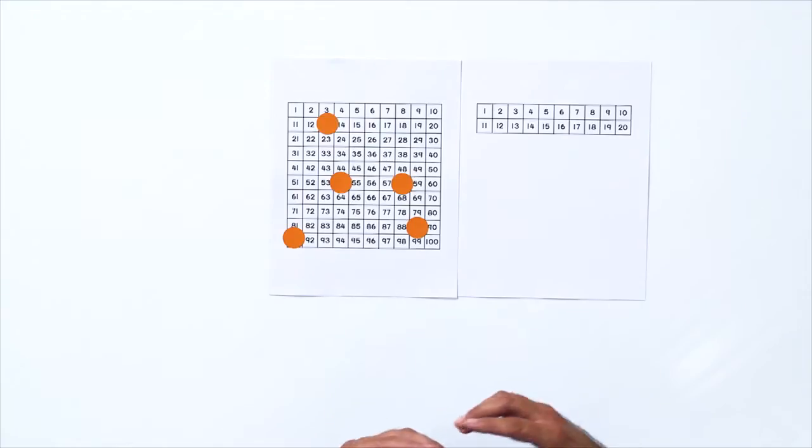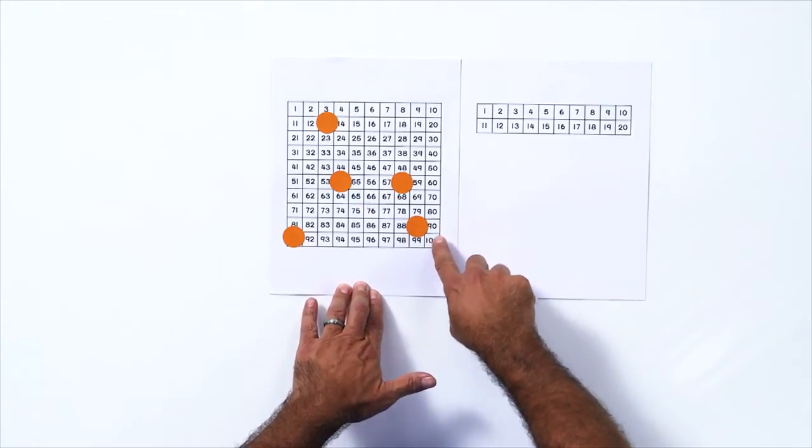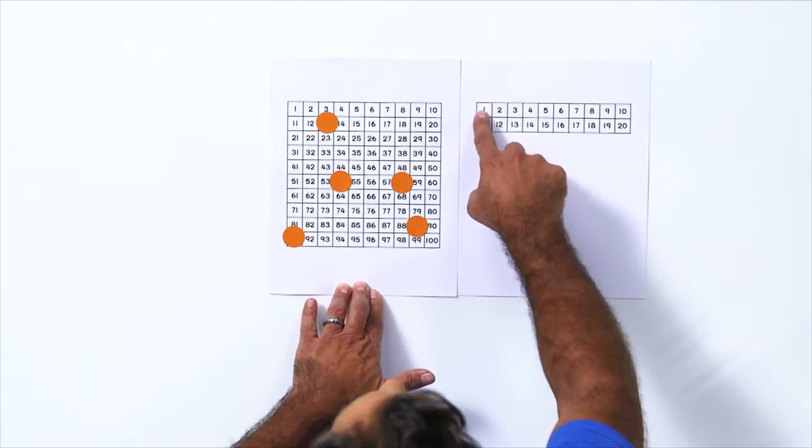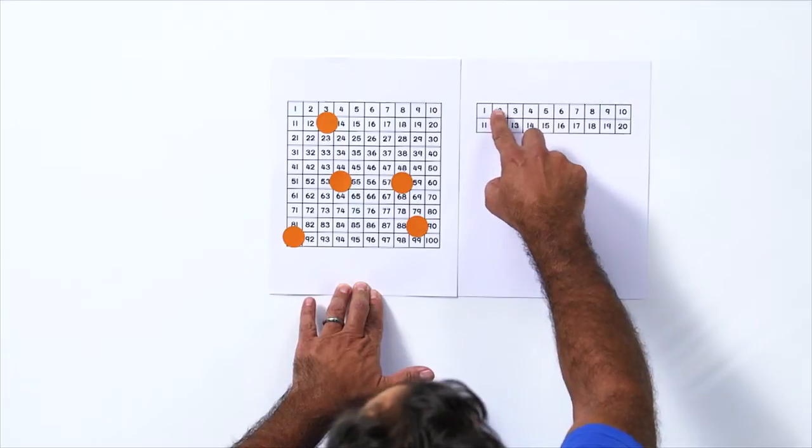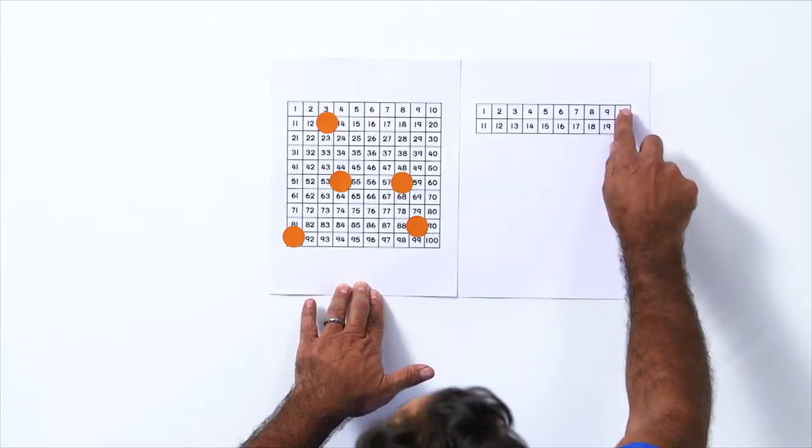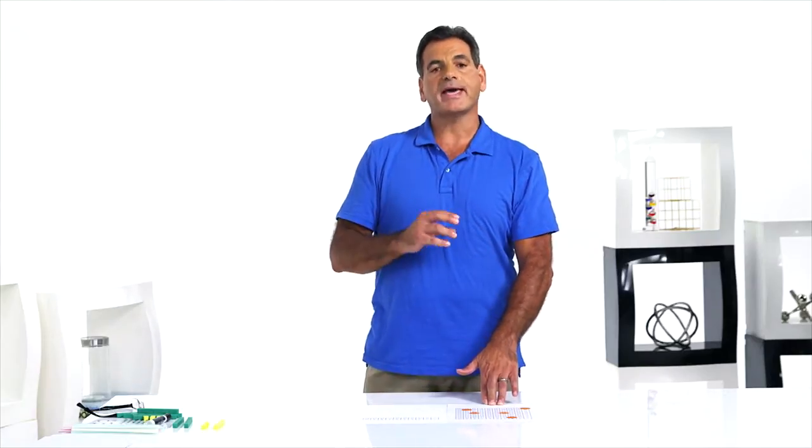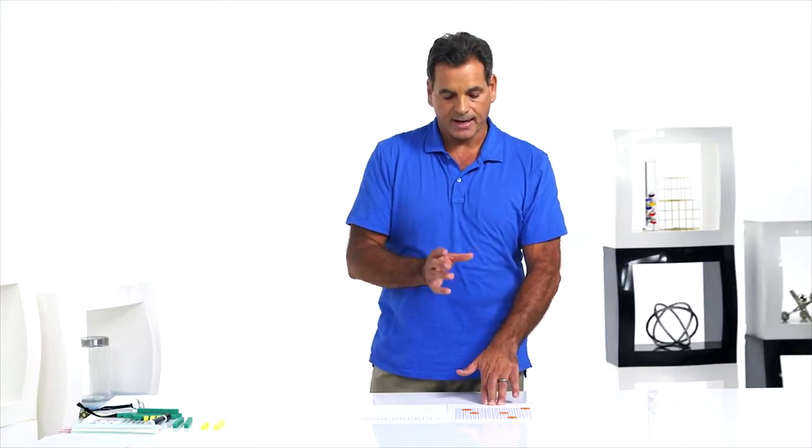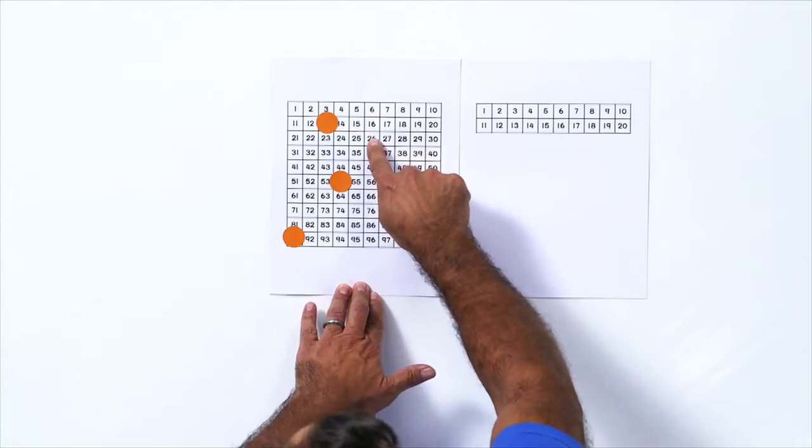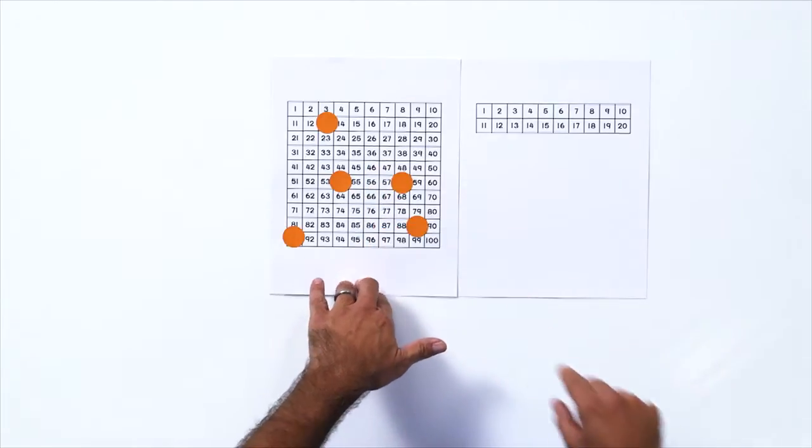It's important to do activities with the hundredths chart now, moving from 90 to 100, 101, 102, 103, and 90, 100, 110, 120. We also need to count by tens within the decade. That means 26, 36, 46, 56. Let's look at some activities that students can do to help them learn to read and write numbers within 120.